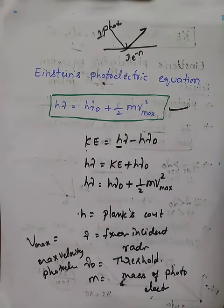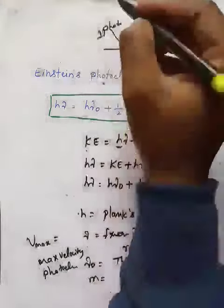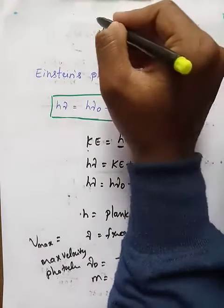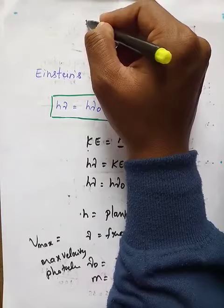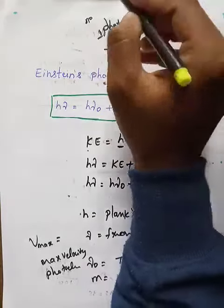As the intensity of incident radiation increases, the number of photons emitted per second increases.